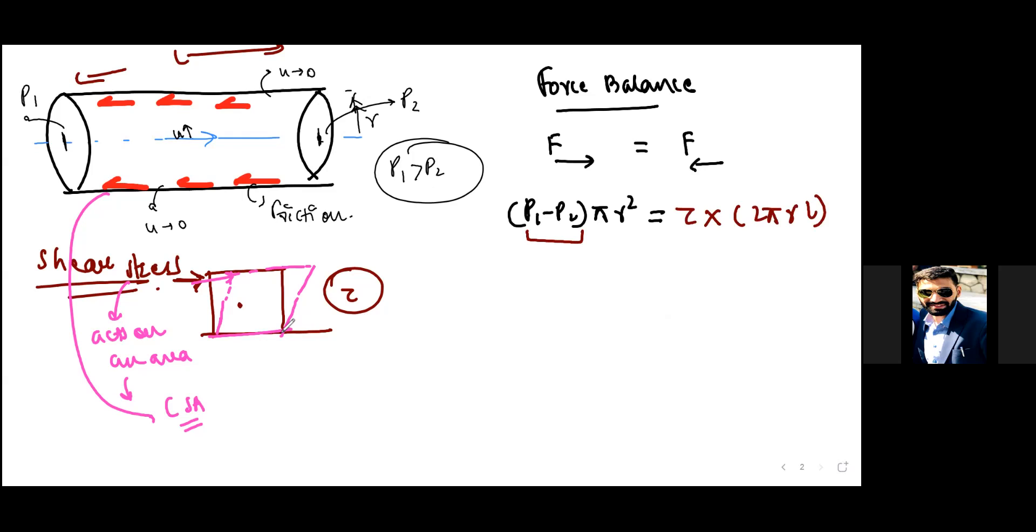In case of your pressure difference it is going to be the cross sectional area πr². Let's denote this thing as Δp so that our things get compact. Our final equation becomes τ is basically Δp multiplied by r divided by 2l. So this is the definition of τ.